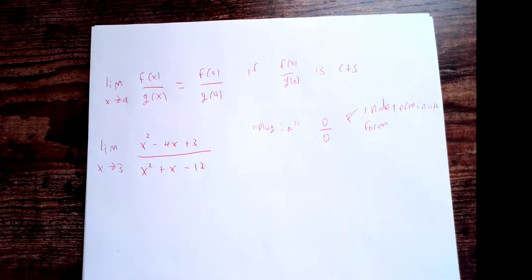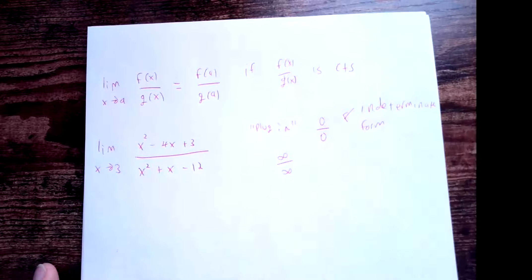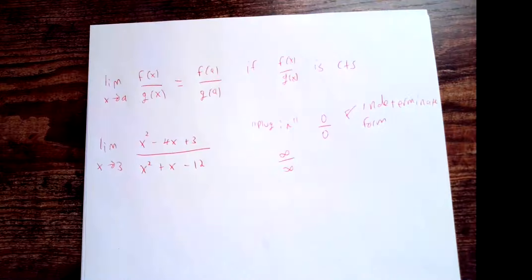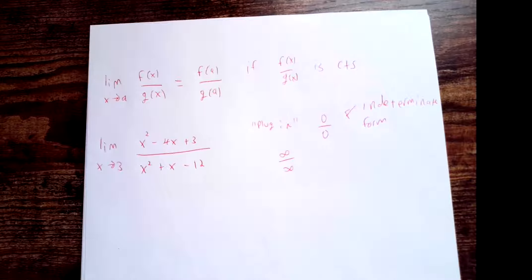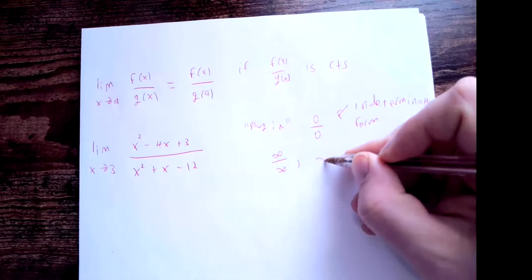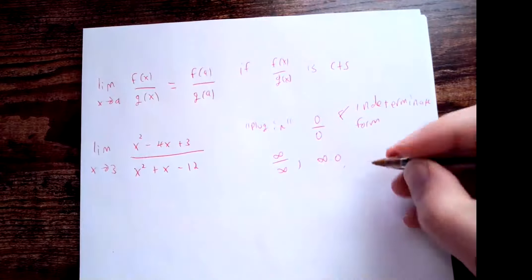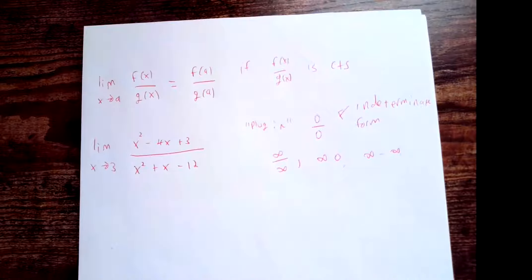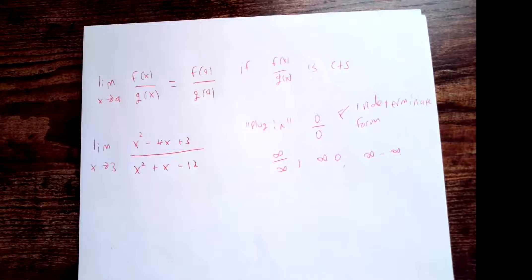Other ratios can also be indeterminate forms. Besides 0/0, it could be infinity over infinity — if both numerator and denominator have infinite discontinuities. Other indeterminate forms include infinity times 0 or infinity minus infinity. These are all meaningless expressions you get when you incorrectly apply the limit laws — just substituting in the value and getting something other than a number.